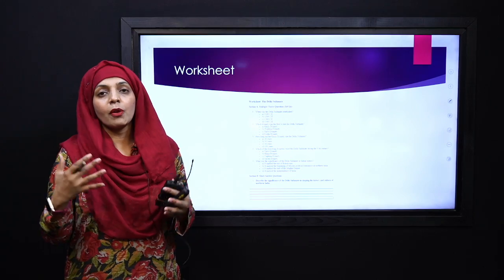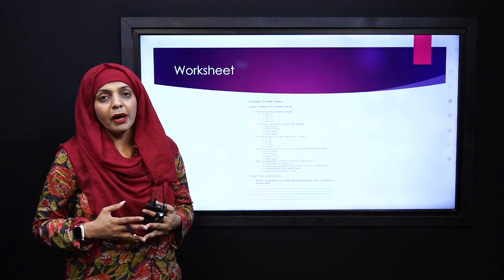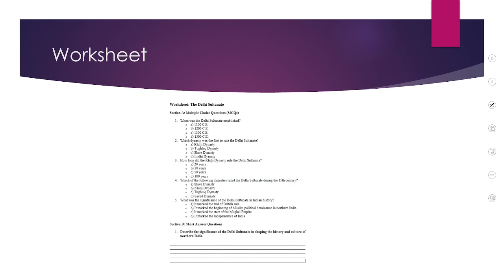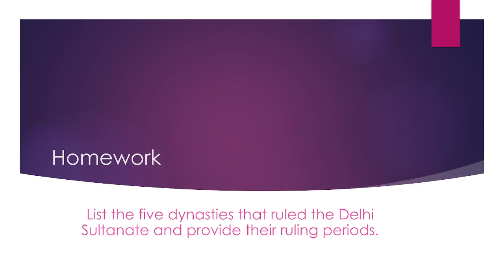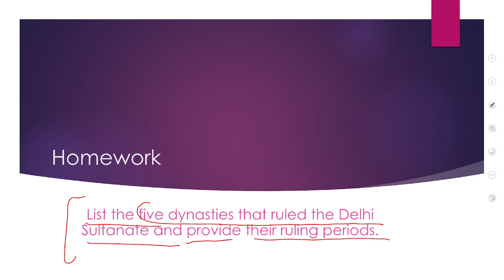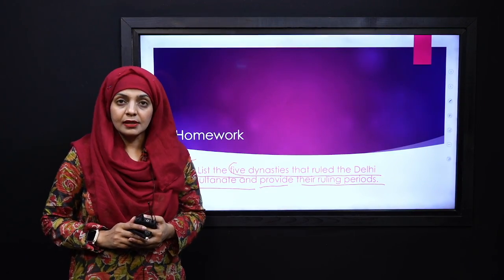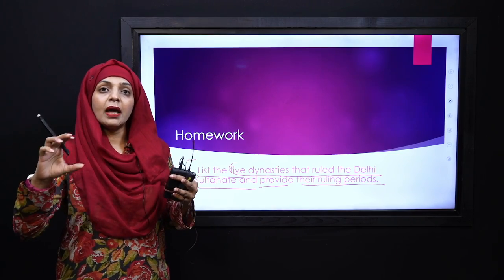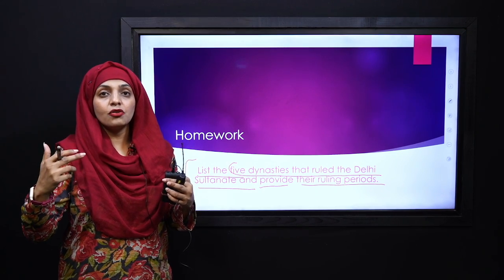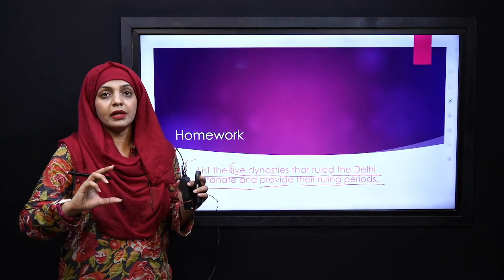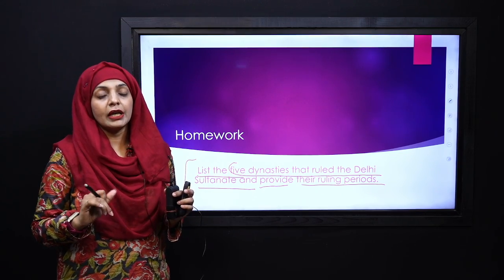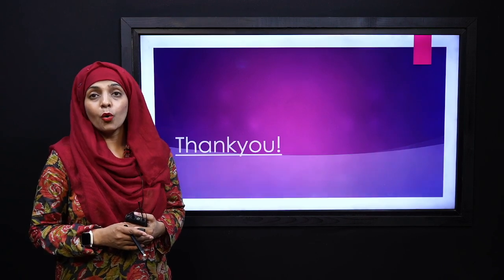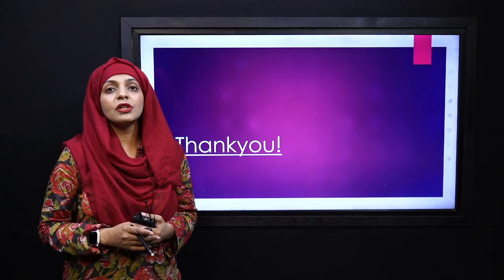So for practice, you can download this worksheet from the description box below this video, or you can get it from your teacher. Pause the video and quickly finish the worksheet. In your homework, you will complete this question in which you will list the five dynasties that ruled the Delhi Sultanate and provide their ruling periods also. Aapne apni notebook mein ek khoobsurat si timeline draw karni hai jis mein har dynasty ka name aur time period mention karein. So this will be your homework. I hope you have enjoyed today's lecture. Stay safe, thank you so much, and Allah Hafiz.